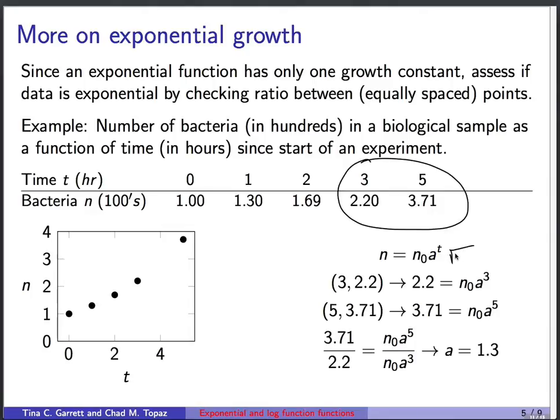We have the same functional form. We plug in the first point. We get 2.2 = n₀a^3. We plug in the second point. We get 3.71 = n₀a^5. Once again, I'm going to divide these equations. I get 3.71 over 2.2 equals n₀a^5 over n₀a^3. The n₀s cancel. a^5 over a^3 is a^2. So a^2 equals this ratio. We take the square root. So a equals the square root of 3.71 over 2.2 or 1.3, which is the same.